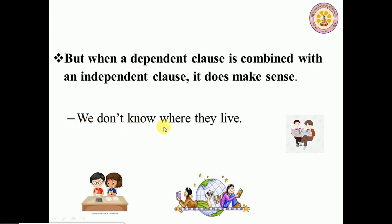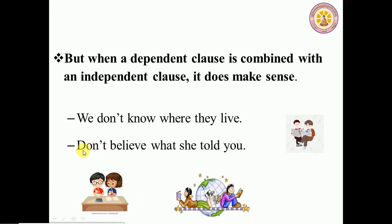For example: 'We don't know where they live.' Here, 'where they live' is the dependent clause, and 'we don't know' is the main clause. When the main clause connects with the sub-clause, it becomes a complete sentence: 'We don't know where they live.' One more: 'Don't believe what she told you.' 'What she told you' is the sub-clause connected to the main clause 'don't believe.' When the sub-clause combines with the main clause, it makes a complete sentence.